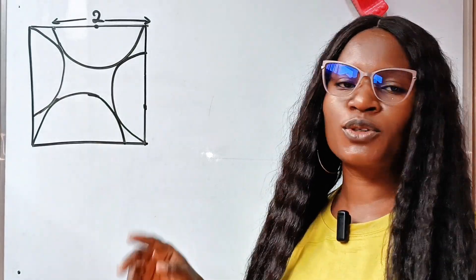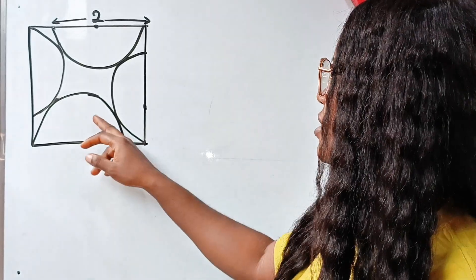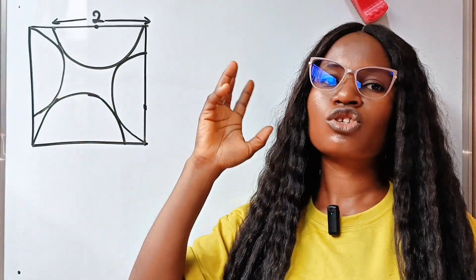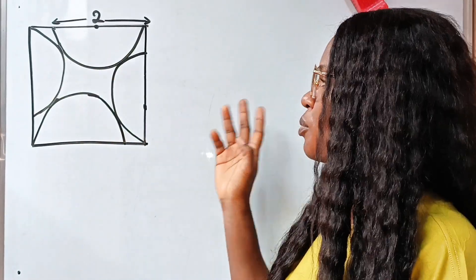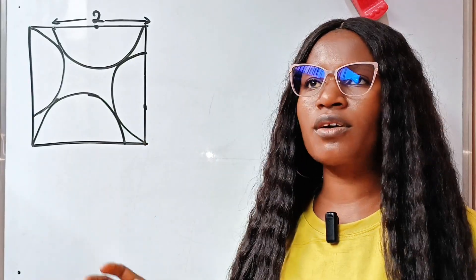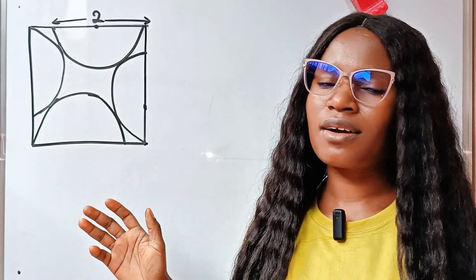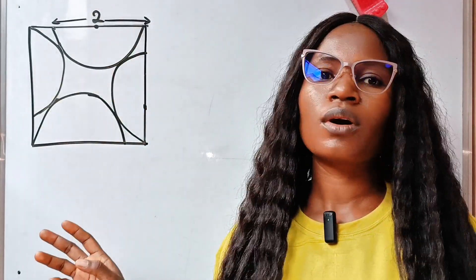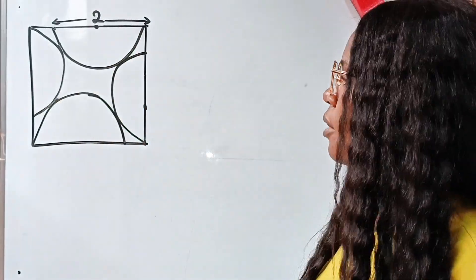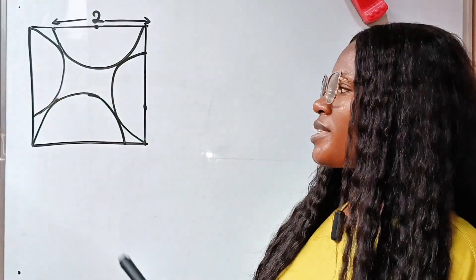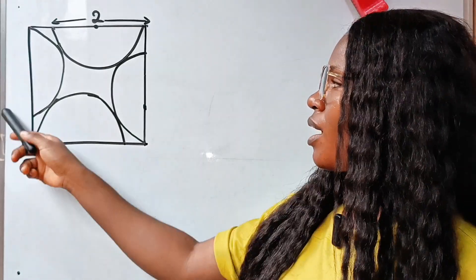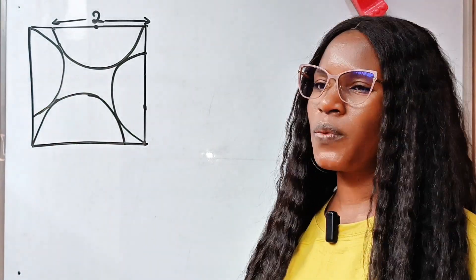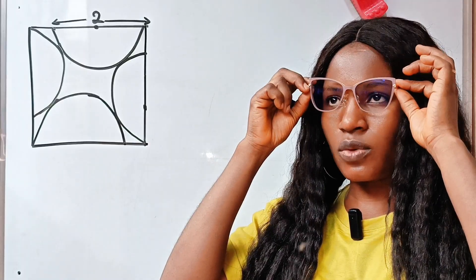This square is not drawn to scale, and these semicircles are supposed to be equal. But because it's a freehand sketch, I couldn't get all of them to be equal. Know that they are all equal, which means that their diameters are equal as well. Now, back to the question, we are asked to find the area of the square.